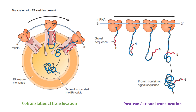Here is the first image showing co-translational translocation. This is the endoplasmic reticulum vesicle membrane. This is the translocon protein, also called the transmembrane protein, and these are the ribosomes. The ribosomes are targeted to bind to the ER membrane via an amino acid sequence shown in red on the polypeptide chain being synthesized.